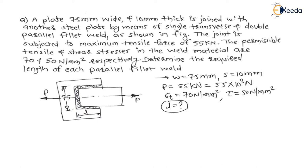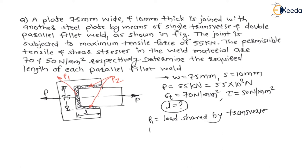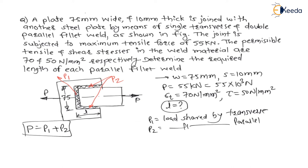Let us assume the transverse fillet weld shares load P1 and both parallel fillet welds share load P2. P1 is the load shared by the transverse fillet weld, and P2 is the load shared by both parallel fillet welds. The total load equals load shared by transverse plus load shared by parallel. We have formulas to find each.